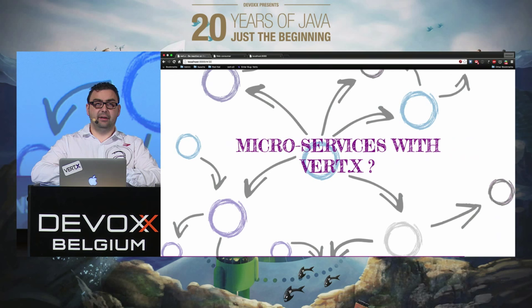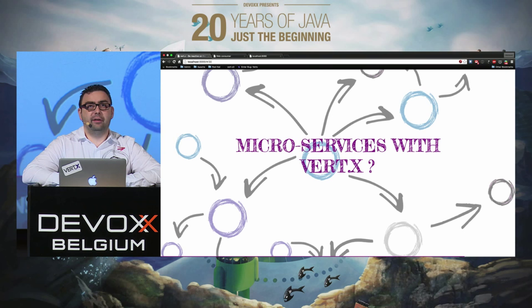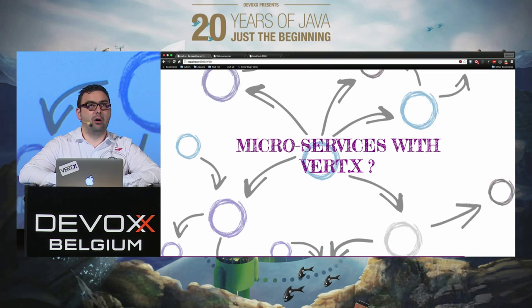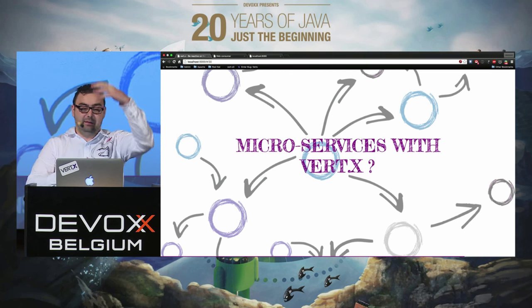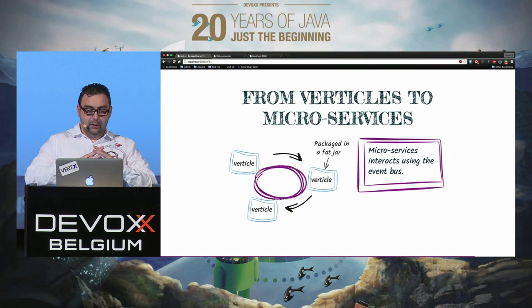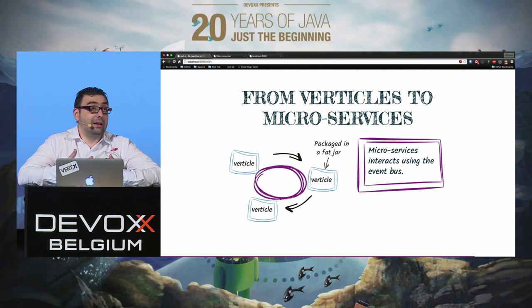Microservices with Vert.x. Microservices are not about REST, not about HTTP, not about Kubernetes or Docker. It's an architectural style, kind of close to SOA — but we're not allowed to say that since everyone hates SOA. Can we build microservice applications with Vert.x? When Vert.x was started, it pushed this model without calling it microservices.